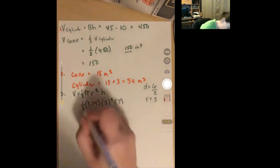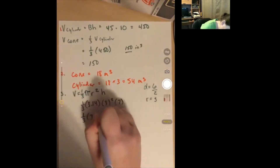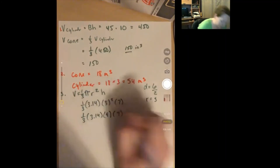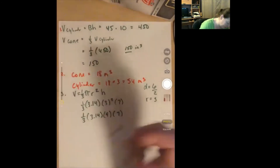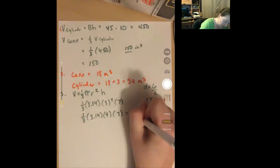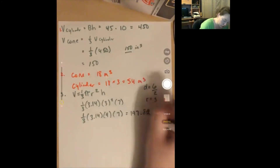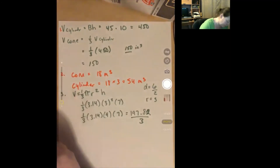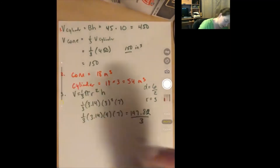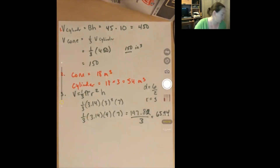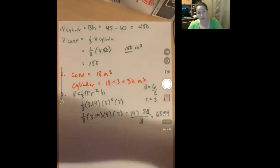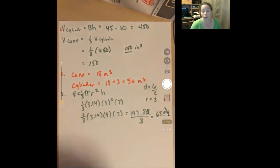So it becomes one-third times 3.14 times 9 times 7. That gives 197.82 divided by 3, which gives 65.94. Rounded to the nearest tenth: the digit in the hundredths place (4) tells us to keep the tenths digit the same, so the answer is 65.9 — we just drop the 4.